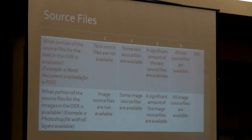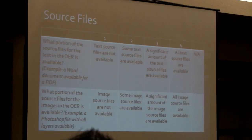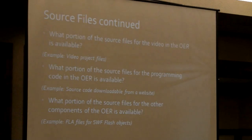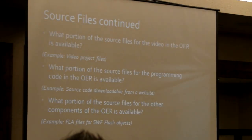The last one — the S in ALMS — is the portion of source files available. So if I can't edit it, do you at least have the source files available to me? Do I have a Word document? You gave me a PDF, but did you give me the Word document? Some kind of source file — whether it's text, images, video, audio, programming code — is the source code available, and source files for anything else.